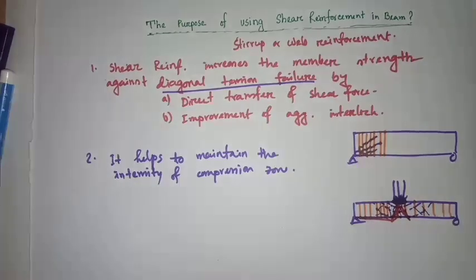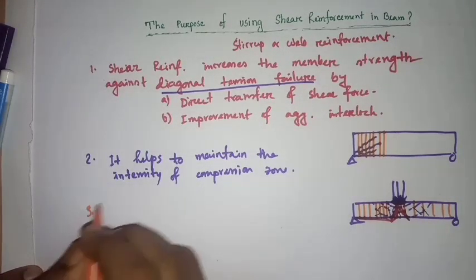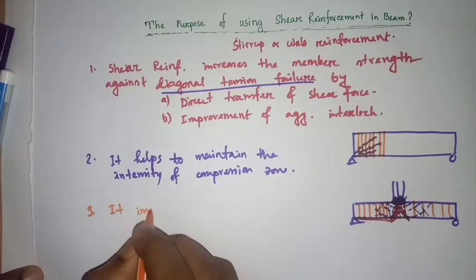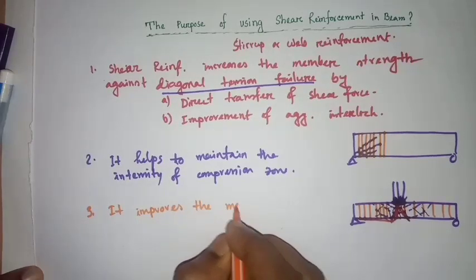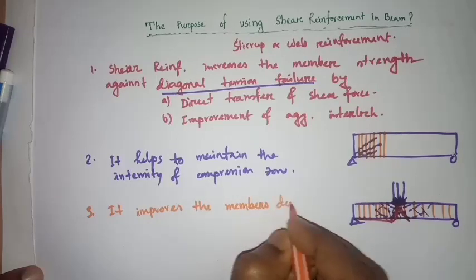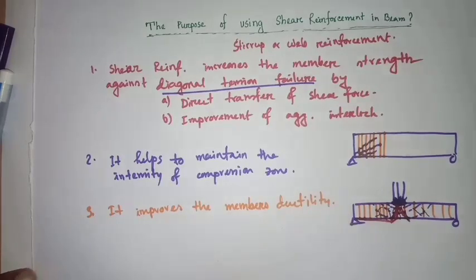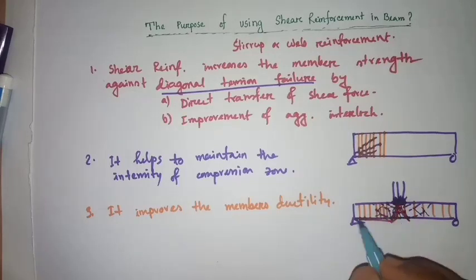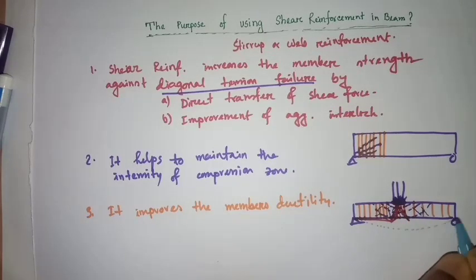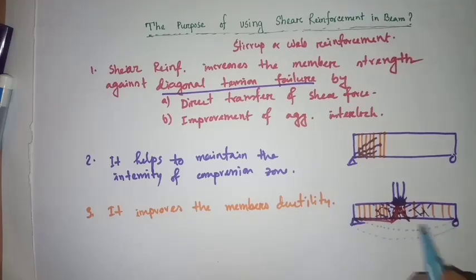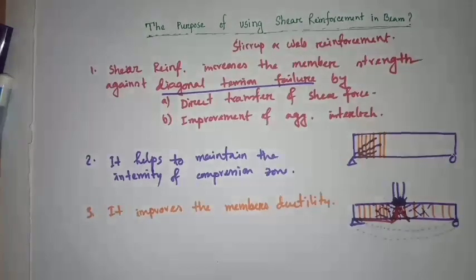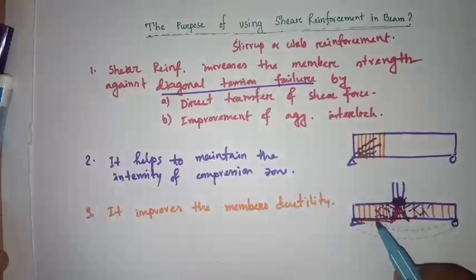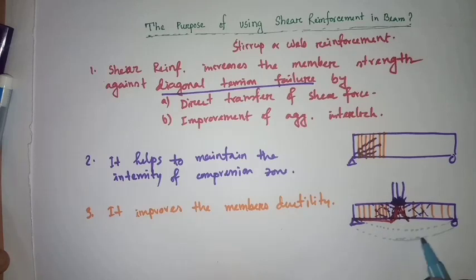Purpose number three: shear reinforcement improves the member's ductility. When a load is developed over and acts on the beam, some deflection will be shown under the beam section. To protect the beam against this kind of deflection, we need to provide shear reinforcement or stirrups in the beam.